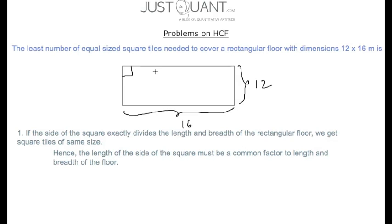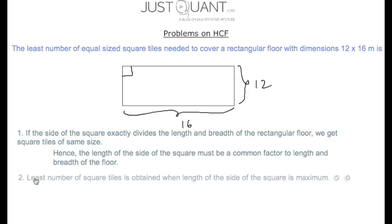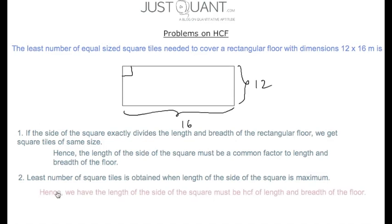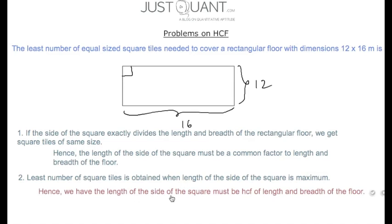To get the least number of equal size square tiles, this happens when the side of the square is maximum. The least number of square tiles is obtained when the length of the side of the square is maximum. Hence, the length of the side of the square must be the HCF of the length and breadth of the floor.